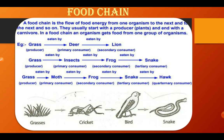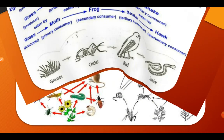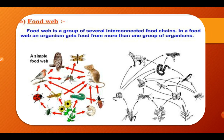For example, a deer eats plants and a lion eats the deer — this is a food chain. The interlinking of food chains is called a food web. A food web is a group of several interconnected food chains. In a food web, an organism gets food from more than one group of organisms.